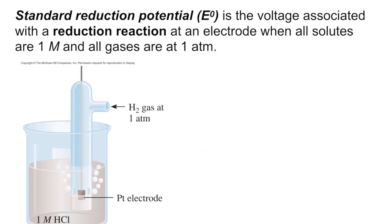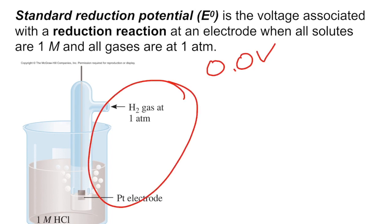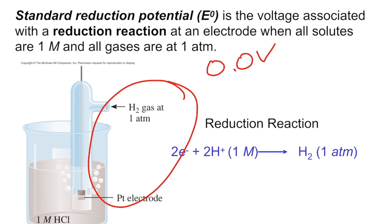That brings us to standard reduction potentials, which we looked at in lab already. These are voltages associated with the reduction reaction at an electrode where concentration is one molar for aqueous solutions, or one ATM for gases. Standard reduction potential tables all have hydrogen set as 0.0 volts — everything is referenced to hydrogen as zero.